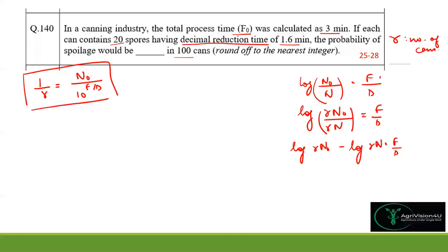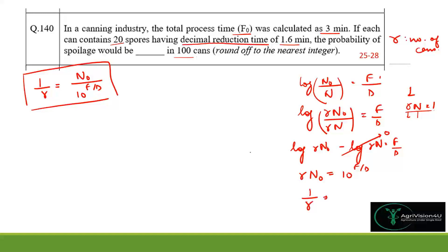If we consider a single can where each can has only one spore remaining after processing, then r·N = 1 (since r = 1 and N = 1). This entire term becomes zero, so log(r·N₀) = F/D. Taking antilog gives r·N₀ = 10^(F/D).